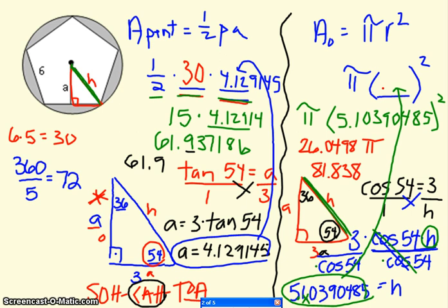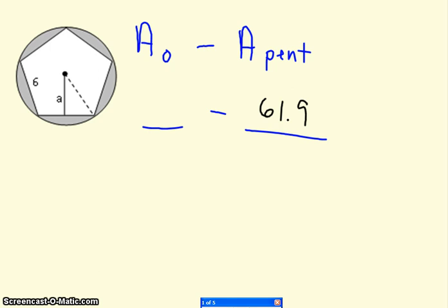And that is where it would be appropriate to round. So this will become 81.8. That is the area of the circle. So I go back and remember that the area of the circle was 81.8. So then I'm ready to subtract, and I get 19.9 units squared. So the area of the shaded region is 19.9 units squared.